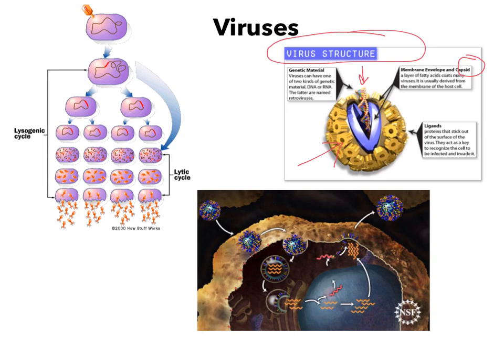The only structure shared with bacteria is the genetic material. Bacteria are going to have DNA and produce RNA from that. But viruses are very different in structure than any other living organism, because they're not a living organism. One of the other reasons that viruses are unique is their replication cycles. That's one of the reasons they make us so sick — they use us. They are a parasite, and they use us to make more of themselves, and in the process they destroy our healthy cells.